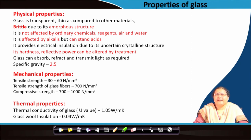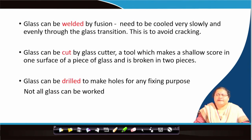Coming to thermal properties: the U-value of glass is 1.05 W/m·K, varying from 0.8 to 1.25. Glass wool has a much reduced value of 0.04 W/m·K, so in glass wool form it actually provides a lot of insulation.